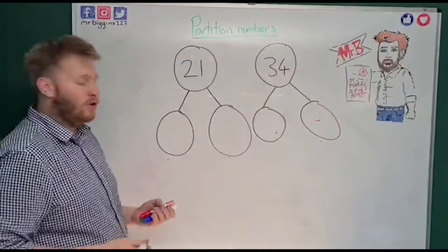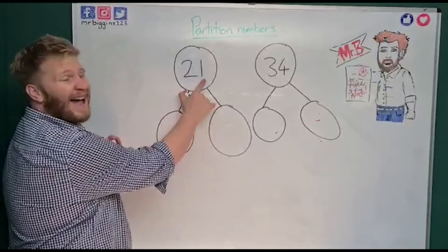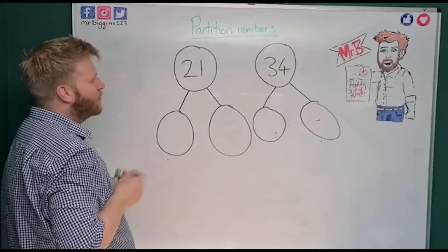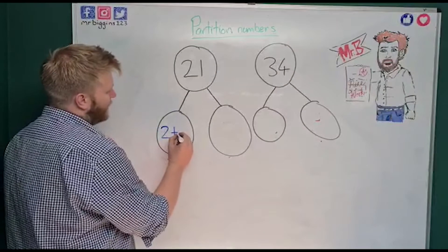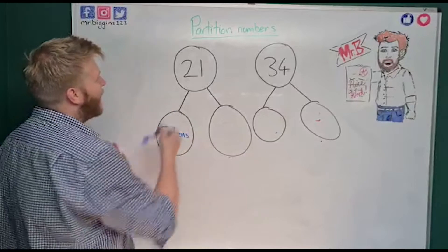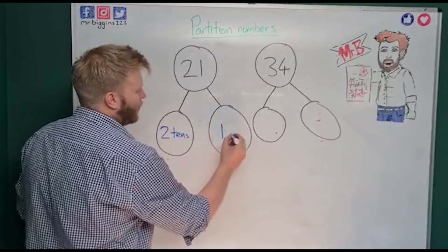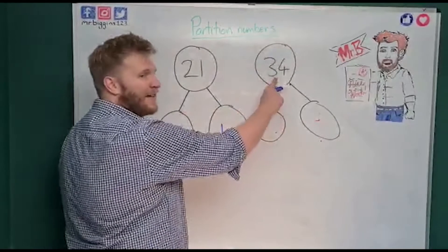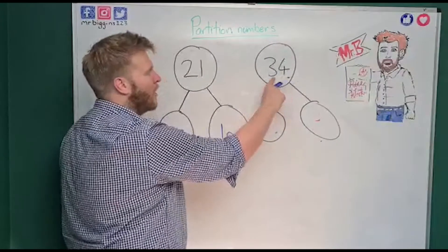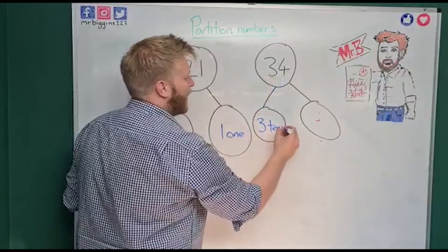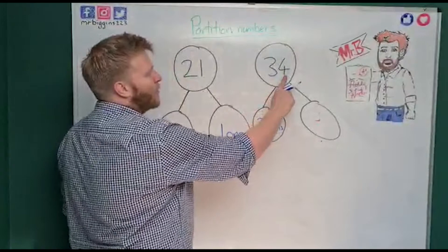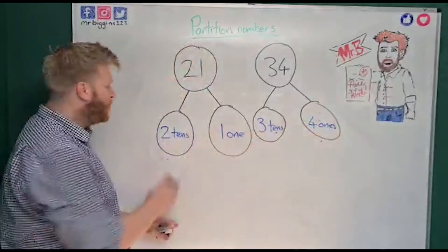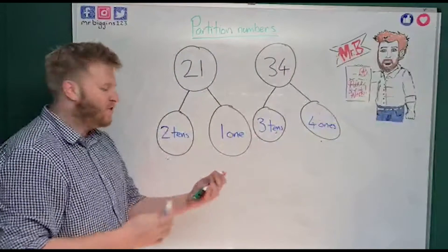I'm going to break them down but just look at my 21. Remember, tens come before ones — so in my tens column I have two tens, and in my ones column I have one one. Now for 34, I can see the tens column before the ones, so I've got three tens in there, and looking at my ones column I have four ones. So I've broken it down, but that's not really how we write our numbers.